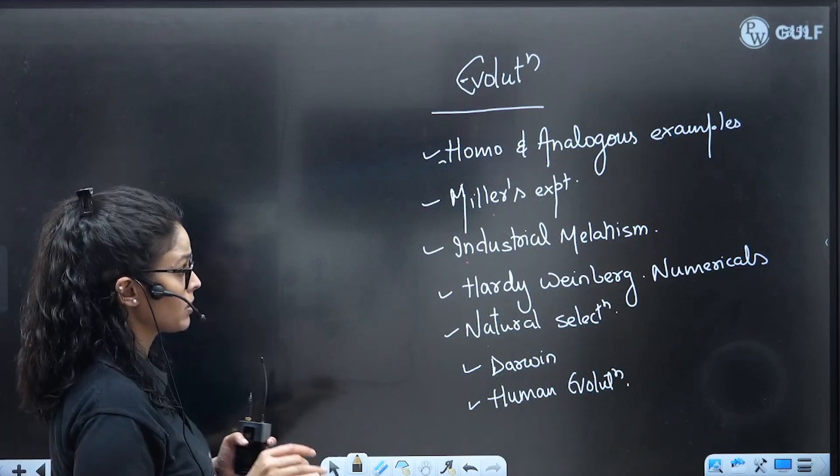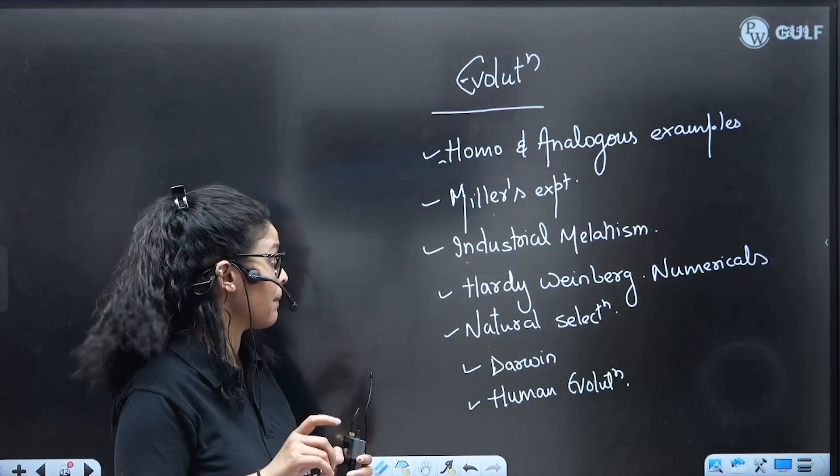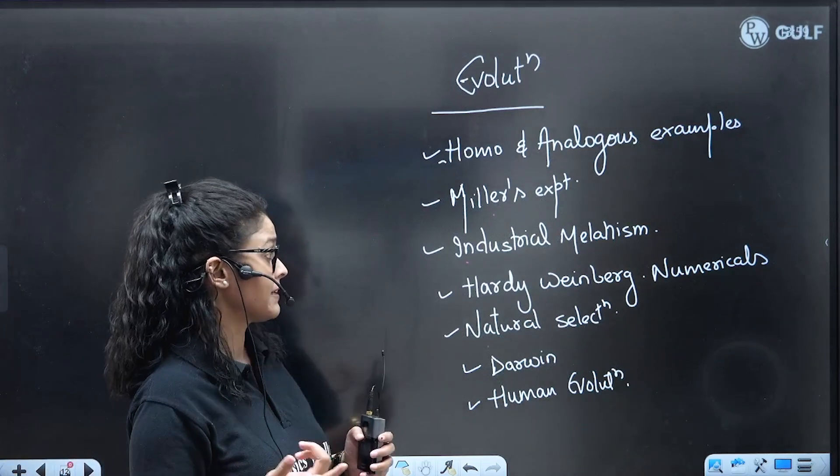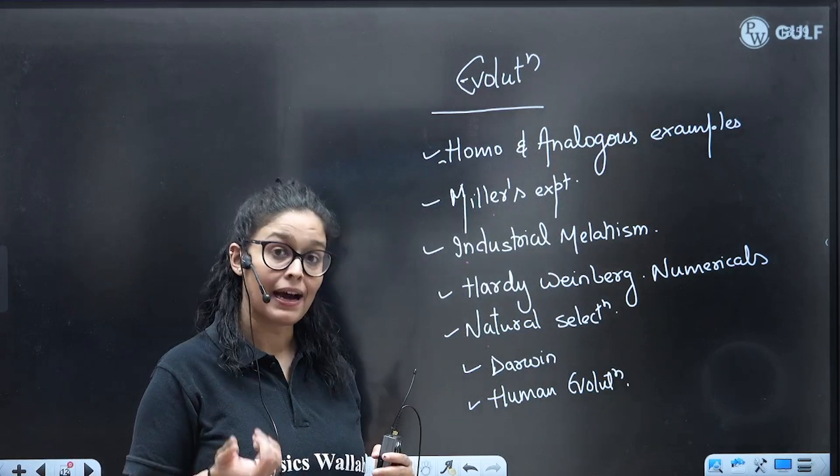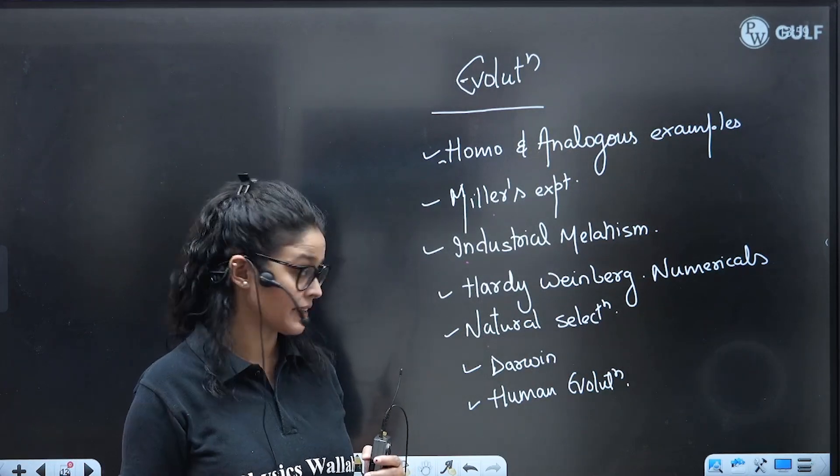Next is Evolution: homologous, analogous organs and their examples. Miller's experiment, Industrial Melanism, Hardy-Weinberg - numericals are important and the factors affecting it.